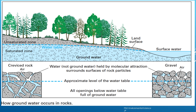This image explains how groundwater occurs in rocks. The first layer is the land surface, the top layer where trees and plants grow. Below that is the unsaturated zone, where the spaces between rocks and soil particles contain both air and water. Then is the water table, the boundary between the unsaturated zone and the saturated zone, representing the top of the groundwater.